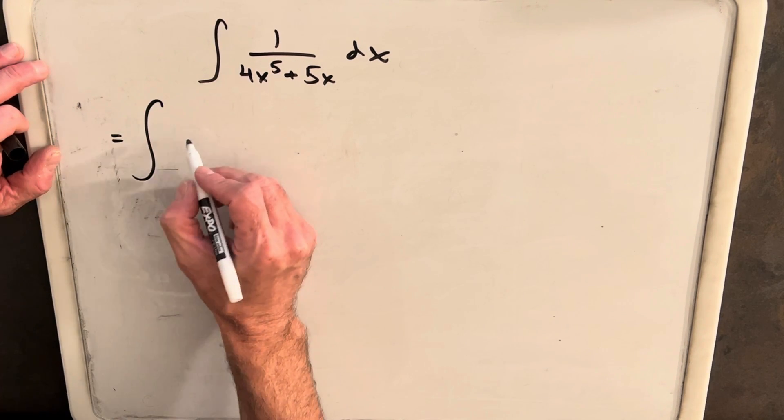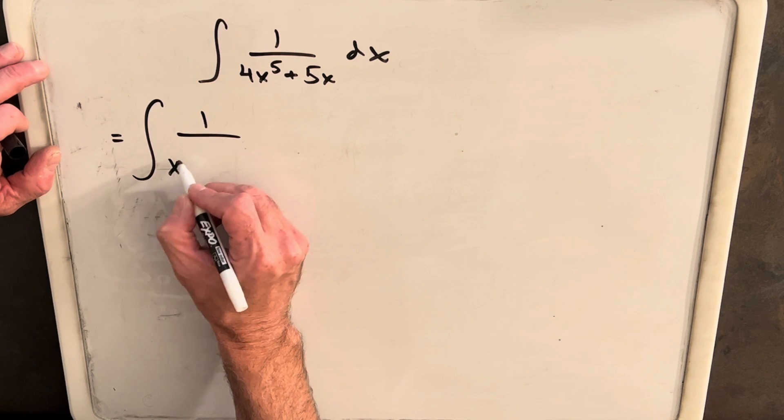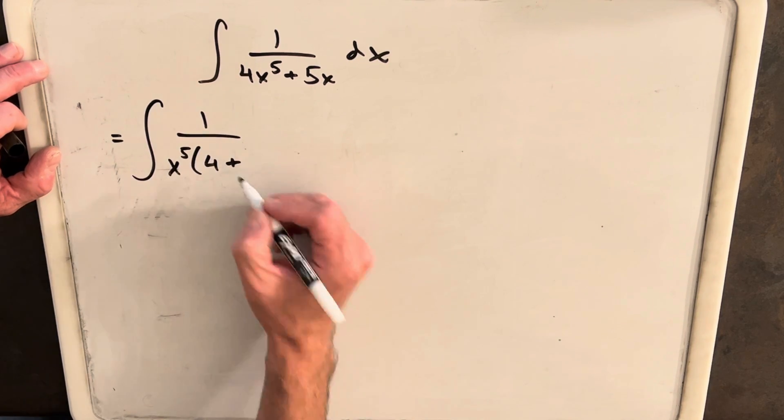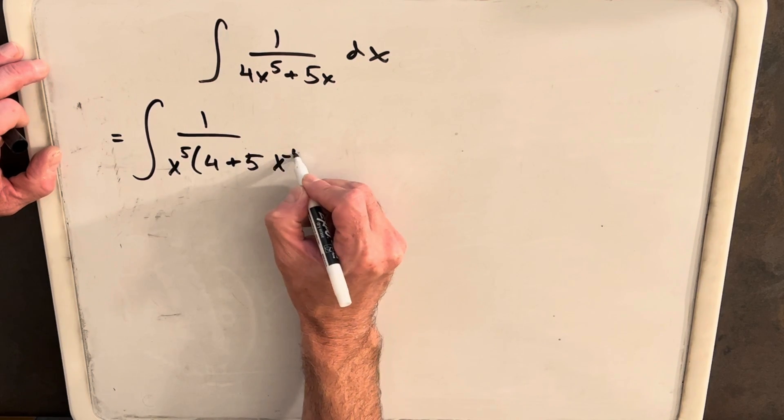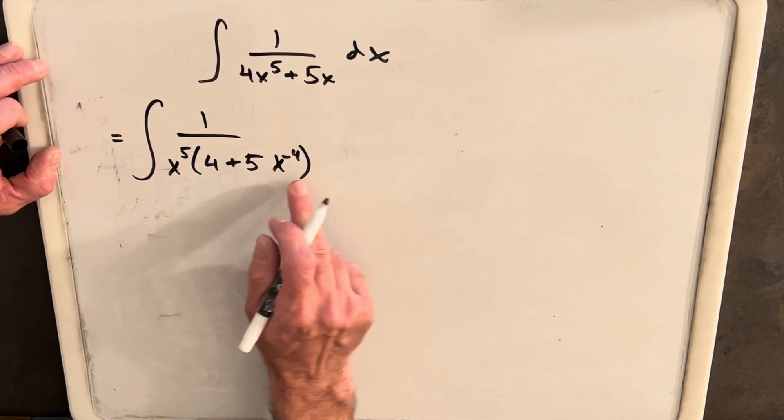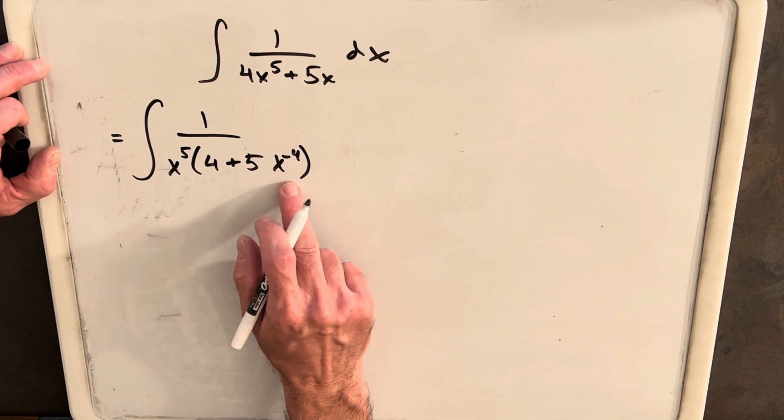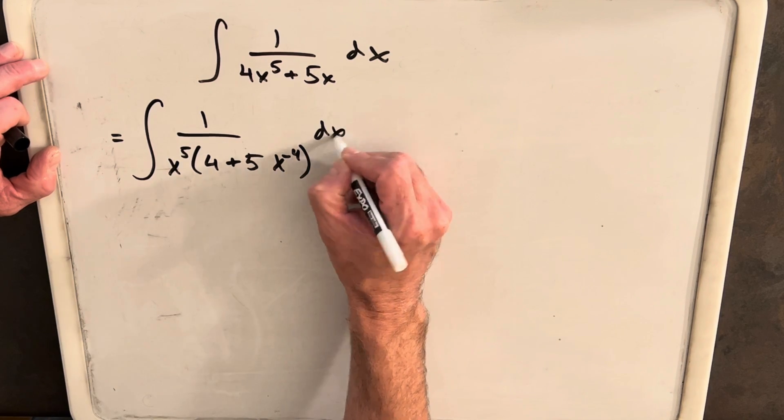We'll rewrite this as 1 over x to the 5th times 4 plus 5. And then this is going to be x to the negative 4th, right? If you multiply x to the 5th times x to the minus 4, you get x dx.